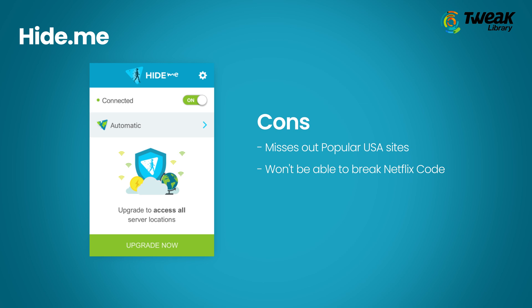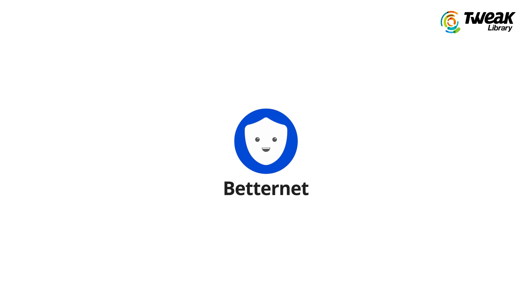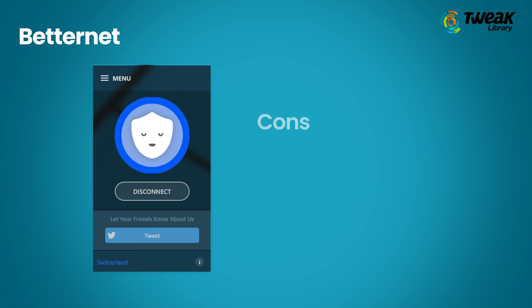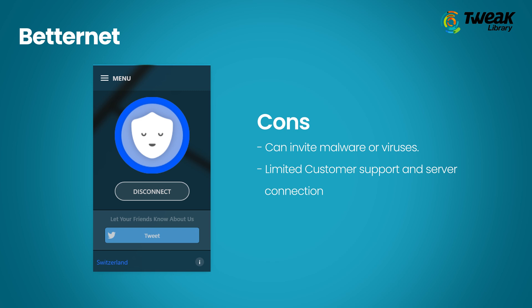You won't be able to break the Netflix code with Hideme. Those searching for the cheapest way to remain anonymous on the internet while browsing can always rely on Betternet. It allows five simultaneous connections at a time keeping security in mind, and you do not even need to register anywhere, which sorts the main purpose of anonymity. On the downside, it can invite malware or other viruses to your device, and Betternet has limited customer support as well as limited server connections.